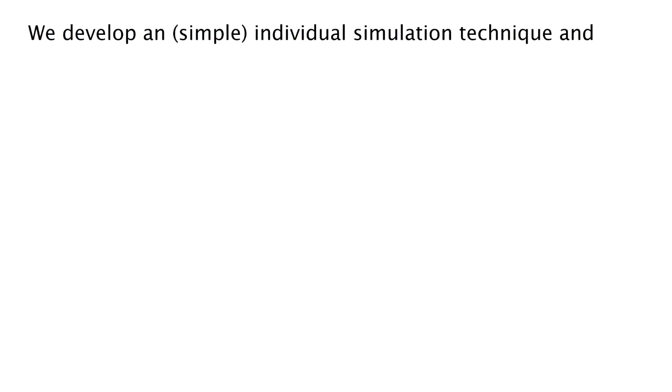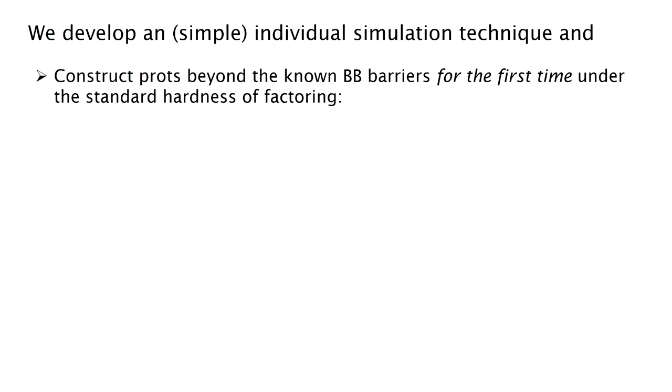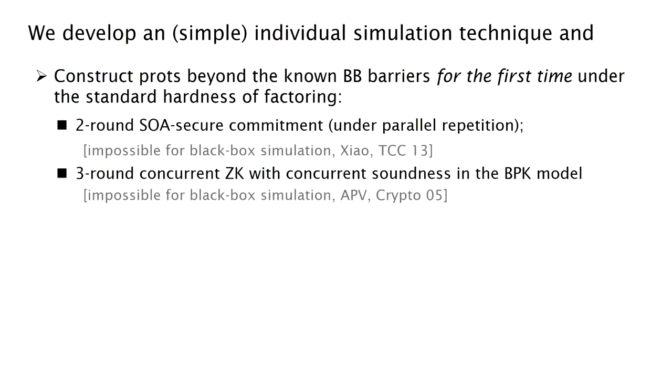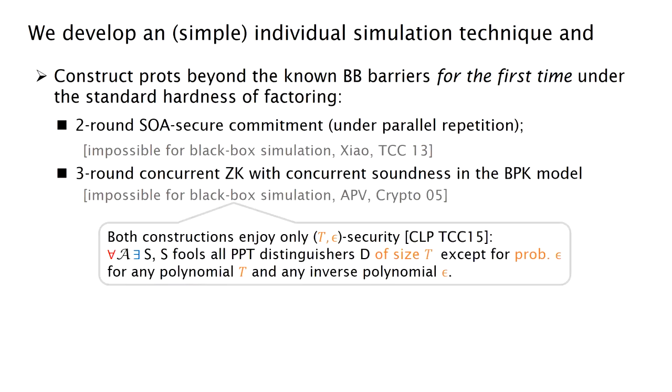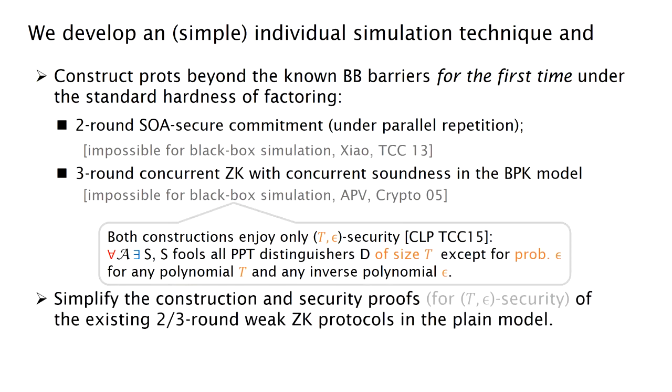In this paper, we develop such a simple individual simulation technique and then we construct two protocols that break the low round black box barriers for the first time under standard assumption. And these protocols enjoy somewhat weaker security we call T-epsilon security, where the simulator depends on the size of the distinguisher and error probability we tolerate. And we also simplify the constructions and security proofs of the existing low-round weak zero-knowledge protocol in the plain model.